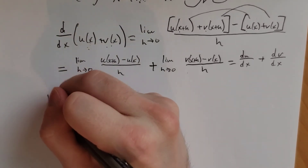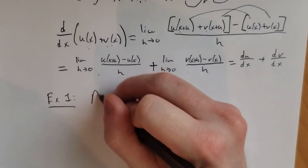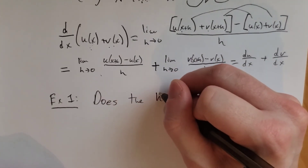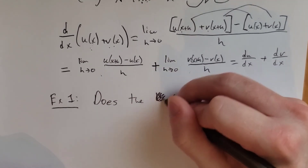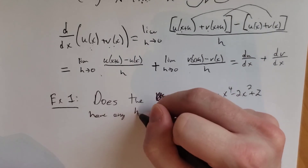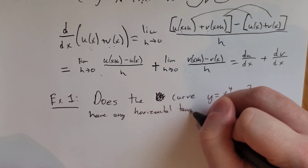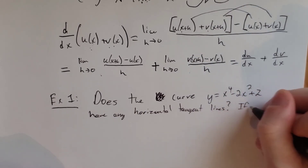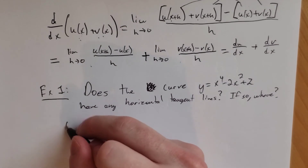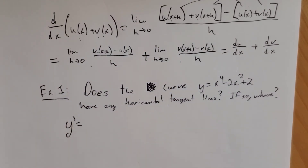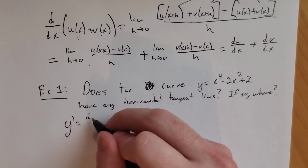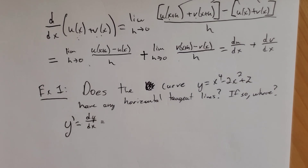The last thing we'll do in this video is an example using several of these rules. Does the curve y equals x to the fourth minus 2x squared plus 2 have any horizontal tangent lines? If so, where?